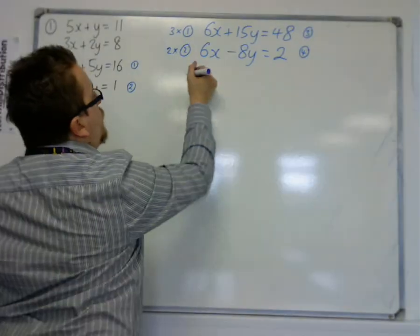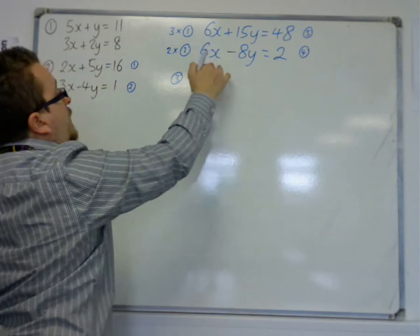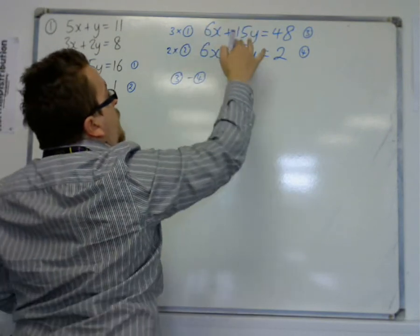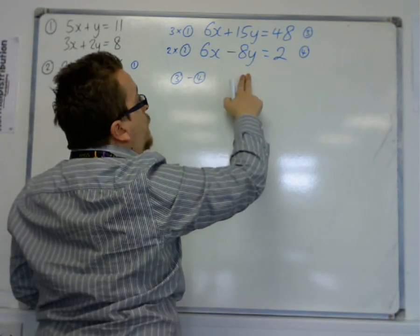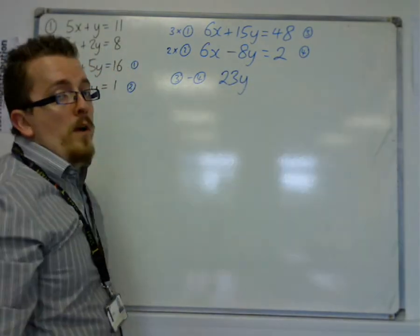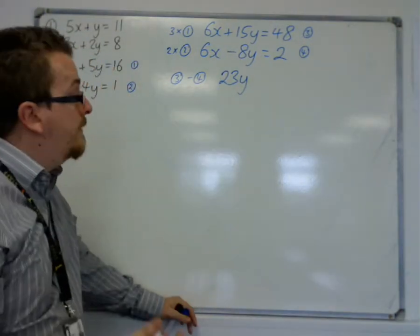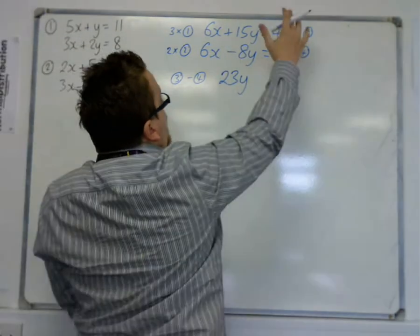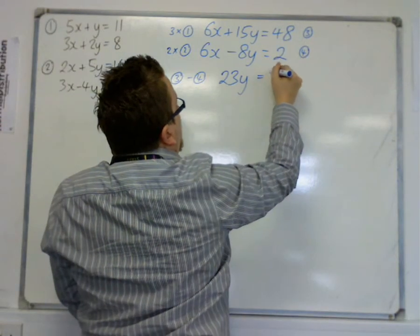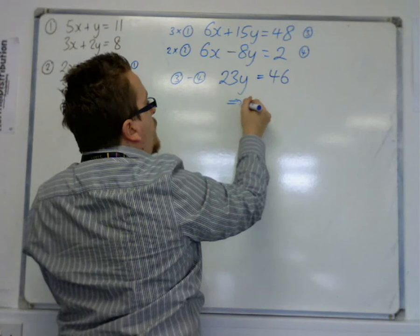So I can now do 3 take away 4. 6x take away 6x is 0. 15y take away minus 8y is 23y. This is a bit where a lot of students would make their mistake and write down 7y here, because they've just done 15 take away 8. And then we've got 48 take away 2 is 46. So if we've got 23y is 46, then y must be 2.